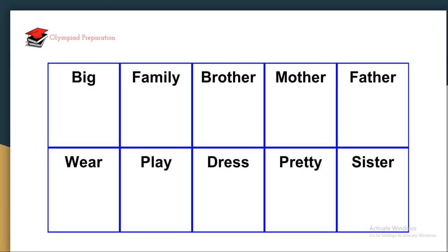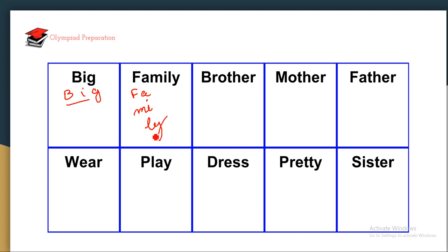So these are the ten words we have learned in this video. Let us recap. First: big — B-I-G. Family — FA-MI-LEE. Divide the whole word into small parts so you can learn them easily: FA + MI + LEE = family.